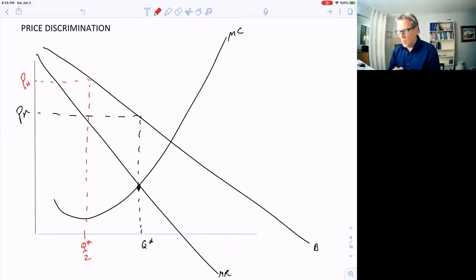Charge them pH. And then the rest of the quantity charge them PM, the monopoly price. And that way we could capture more of the consumer surplus. We could get all this consumer surplus.